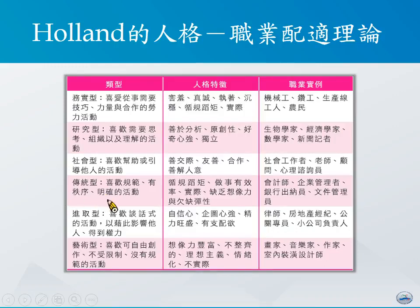第四种常见的类型叫做传统型，泛指一个人喜欢较有规范且有秩序的活动，模糊空间较少，让别人很快速地知道目标是什么。喜欢这样工作类型的人，通常具备的人格特质可能包括循规蹈矩、强调做事情的效率、实际，但通常比较没有想象力并且做事情比较缺乏弹性。比较适合这样工作的职业可能包括会计师、企业的管理人员、银行的出纳人员，或者是某些文件管理人员。